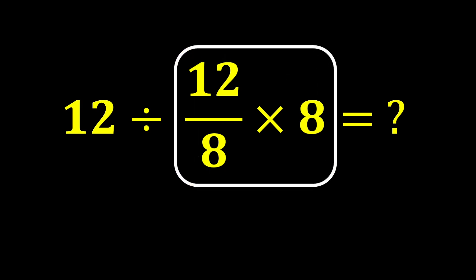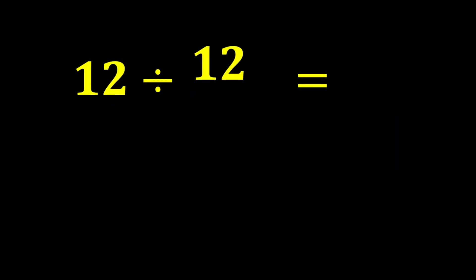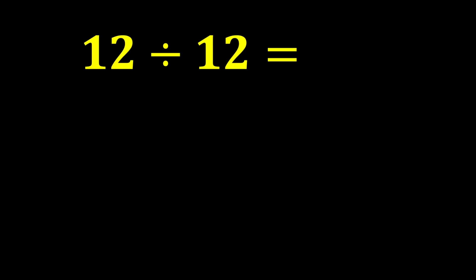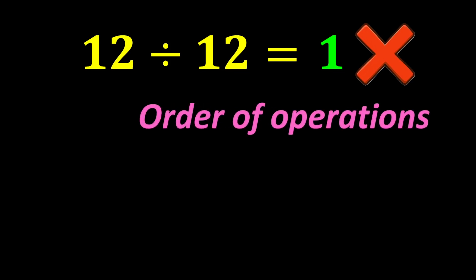First, we perform this multiplication: 12 over 8 multiplied by 8. The 8s cancel each other out, and only 12 remains. At the end, 12 divided by 12 gives us 1, and 1 is our final answer. But this answer is not correct, because we did not follow one of the most important rules of mathematics. This rule is called the order of operations.